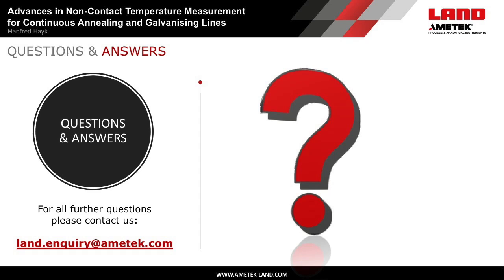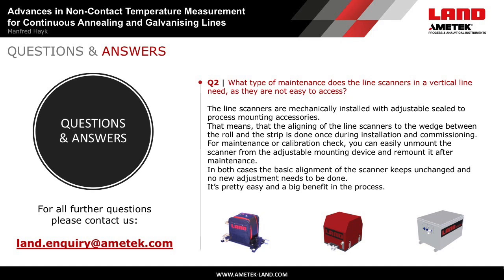Question: What type of maintenance do the line scanners in a vertical line need, as they are not easy to access? The line scanners are mechanically installed with adjustable seal-to-process mounting accessories. The aligning of the line scanners to the wedge between the roll and the strip is done once during installation and commissioning. For maintenance or calibration check, you can easily unmount the scanner from the adjustable mounting device and remount it after maintenance. In both cases, the basic alignment of the scanner keeps unchanged and no new adjustment needs to be done.